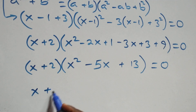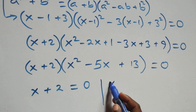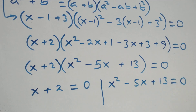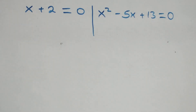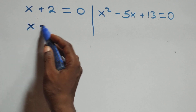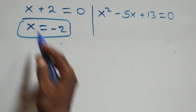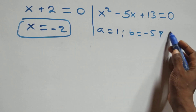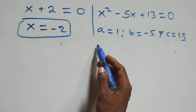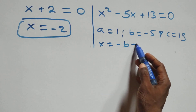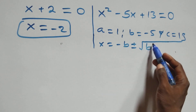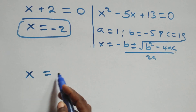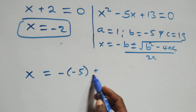So we have two possible cases: x plus 2 equals 0, or x squared minus 5x plus 13 equals 0. Solving the first gives x equals minus 2, which is a real solution. For the quadratic, a equals 1, b equals minus 5, and c equals 13. We apply the quadratic formula: x equals minus b plus or minus square root of b squared minus 4ac, all over 2a.